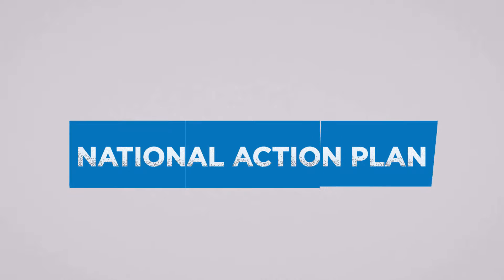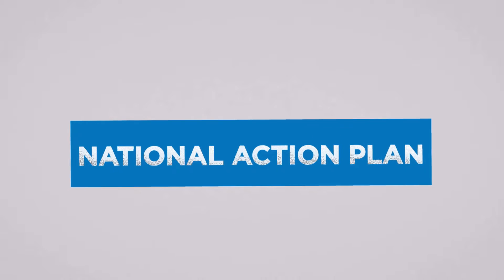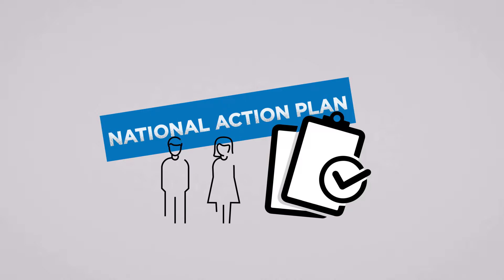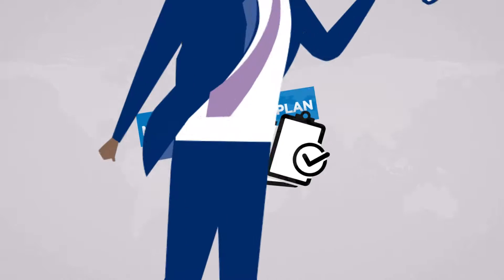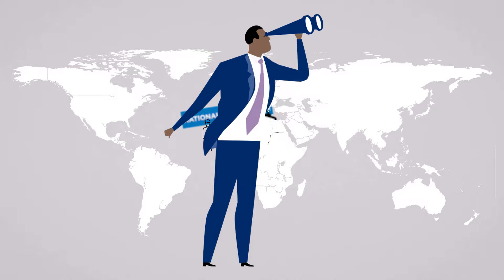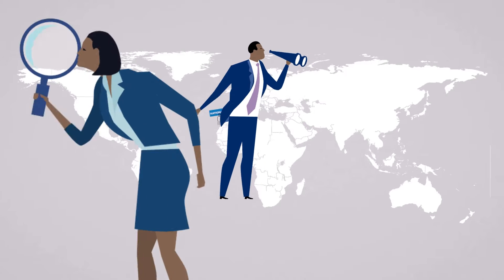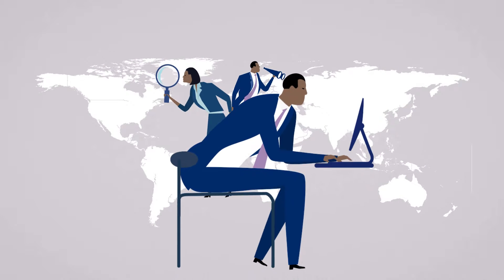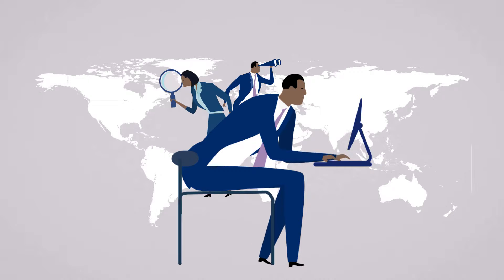A Business and Human Rights National Action Plan is a policy strategy developed by a country to protect you from human rights abuses by business enterprises. It identifies main business and human rights issues, identifies legal gaps, and recommends steps to solve them.